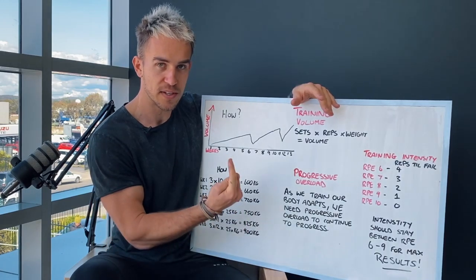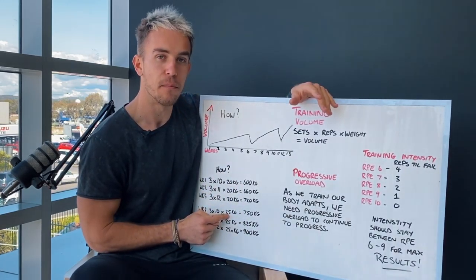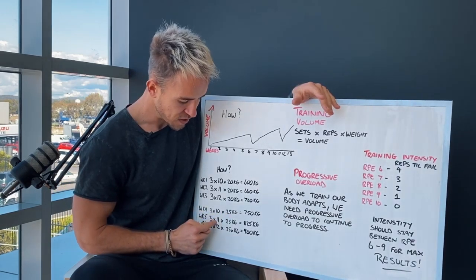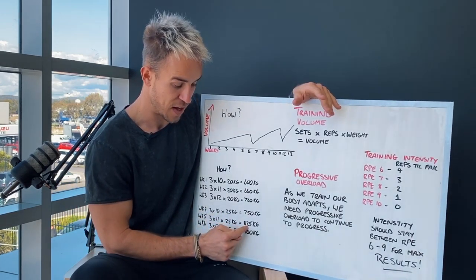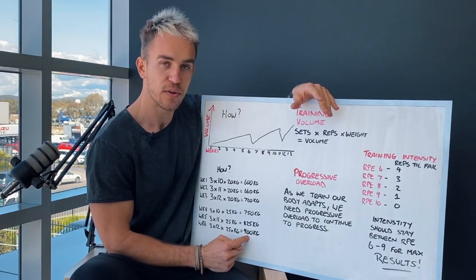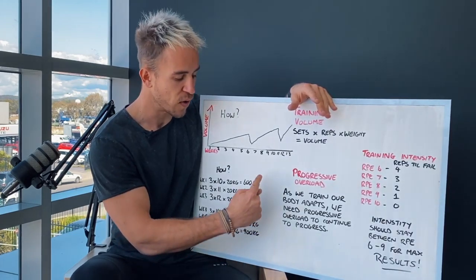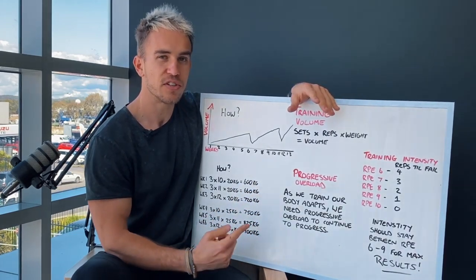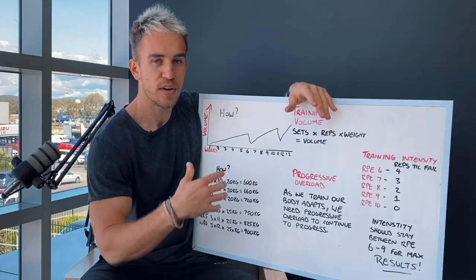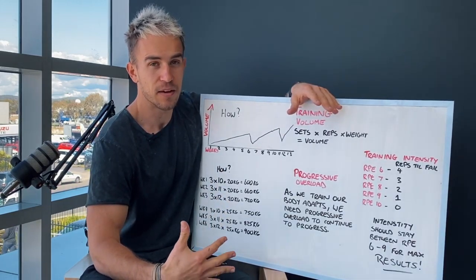So you can see that the volume is up even though we went down in reps and it's because we lifted more weight here. Three sets of 11 at 25 equals now another increase, 825. Three sets of 12 at 25 kilos equals 900 kilos. So you can see that each week we're progressing our training volume and we're just doing it in a smarter approach. We're not going too excessive and trying to smash ourselves and hit complete failure.